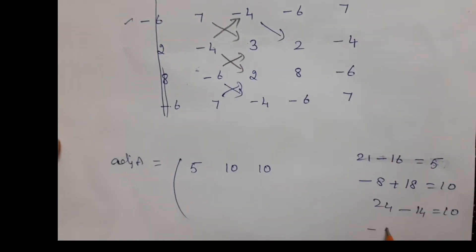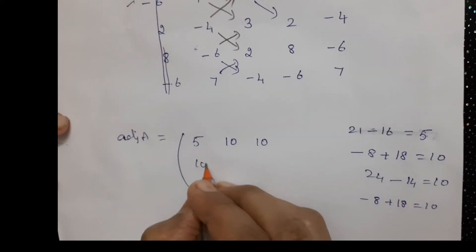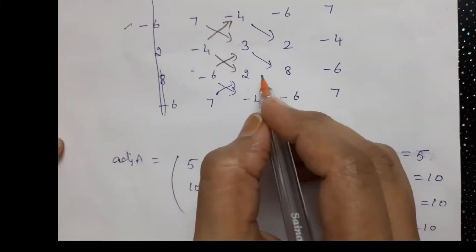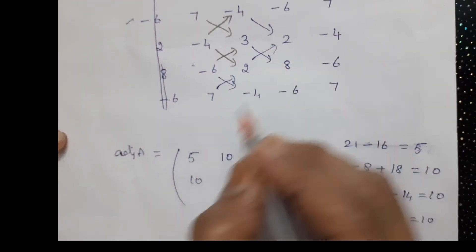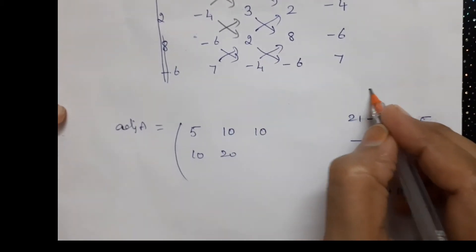So -8 plus 18, that is 10. And here 24 minus 4 is 20, and then -12 plus 32 is 20.